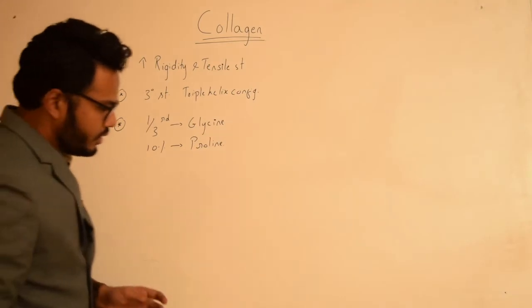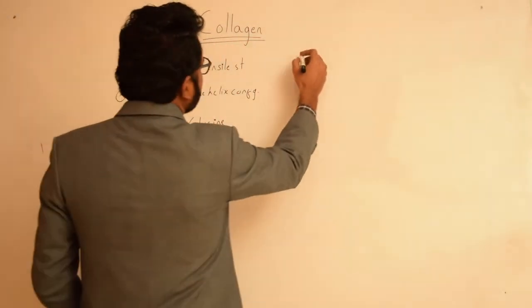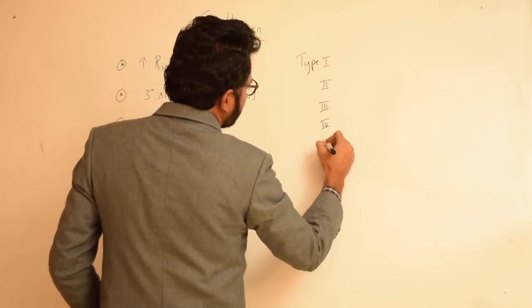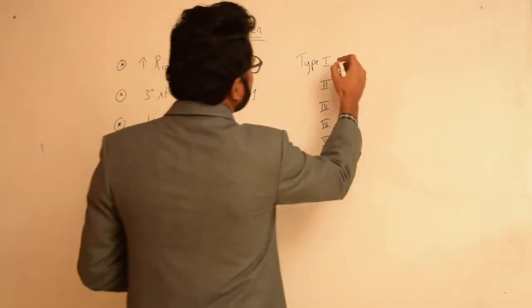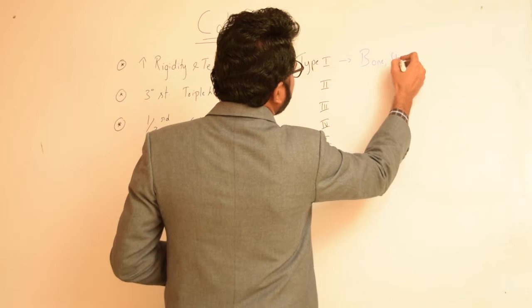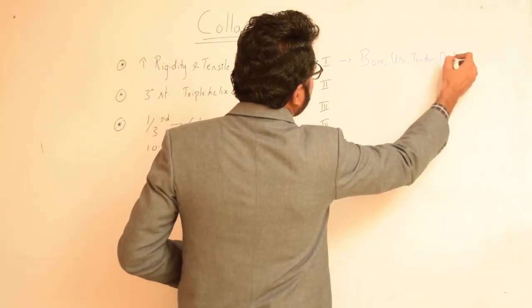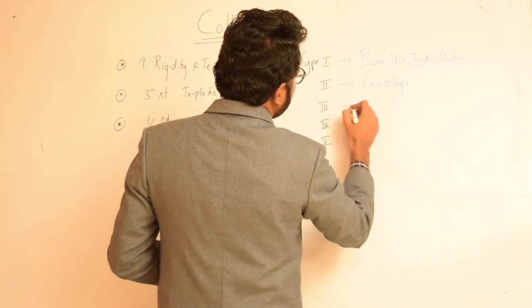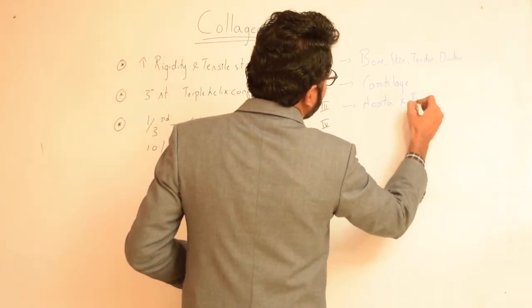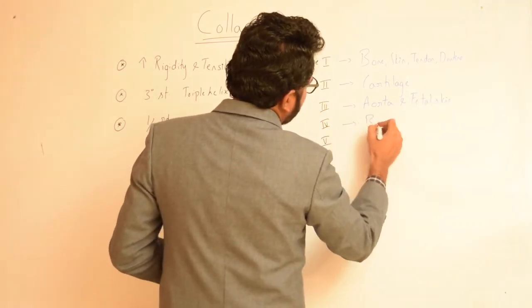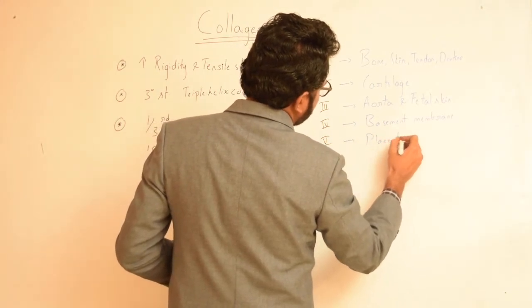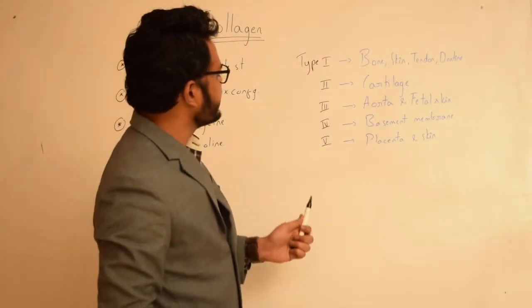We have different types of collagen: type 1, type 2, type 3, type 4, as well as type 5. Type 1 collagen is found in bone, skin, tendon, as well as dentine. Type 2 is found in cartilage. Type 3 is found in aorta and fetal skin. Type 4 is found in basement membrane. Type 5 is found in placenta as well as skin.